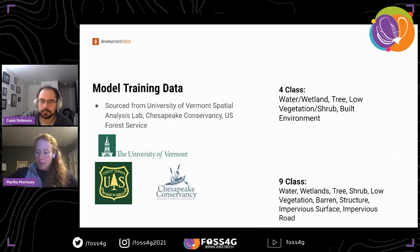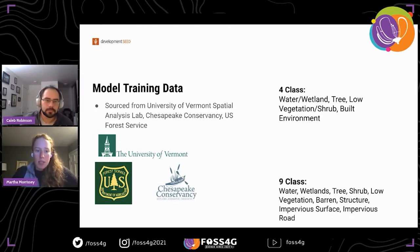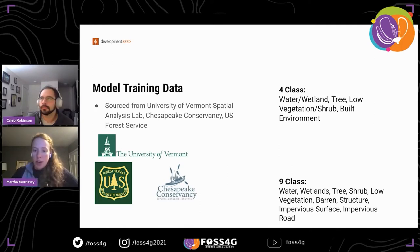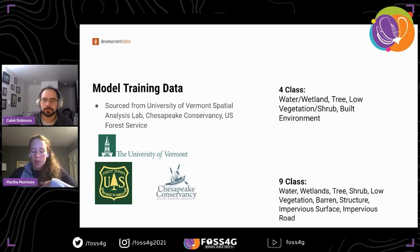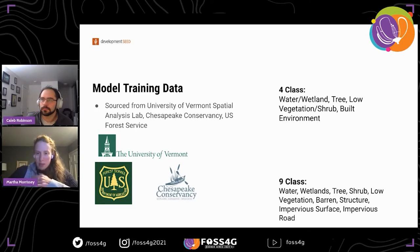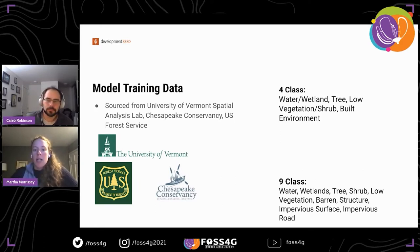It's really tricky to get high-quality land use land cover training data, so we're excited to benefit from work by the University of Vermont Spatial Analysis Lab, the Chesapeake Conservancy, and the U.S. Forest Service for curating high-quality land cover using LiDAR and NAIP imagery. For the starter models, the four-class and nine-class models were both derived from the NLCD label class dataset, which is 13 to 17 classes depending on the region. The four-class model is an aggregation of the classes in the nine-class model.